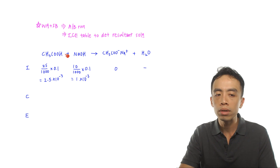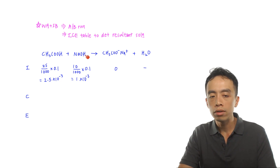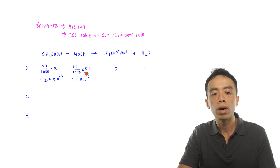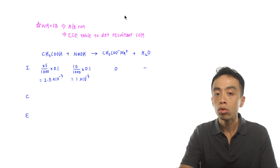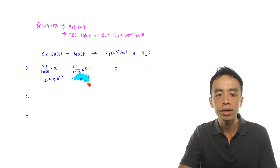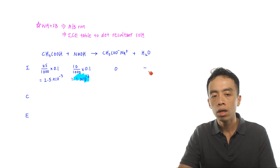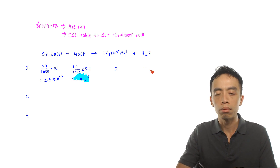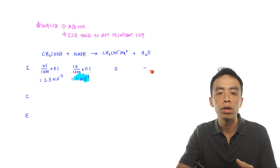The initial moles of CH₃COOH = volume × concentration = 2.5 × 10⁻³ mol. For sodium hydroxide, moles = volume × concentration = 1 × 10⁻³ mol. Comparing the two, sodium hydroxide is the limiting reagent, so 100% of it will be used up. At the beginning there are no products; for water, I put a dash since we are in aqueous medium and the amount of water is not important.